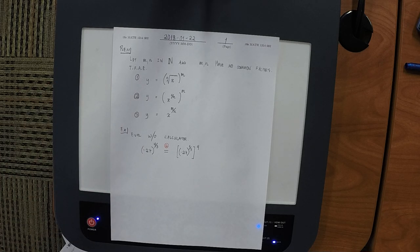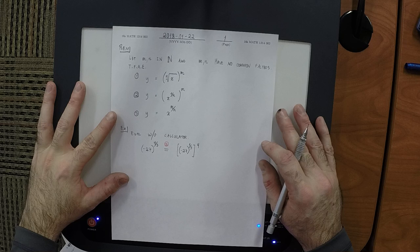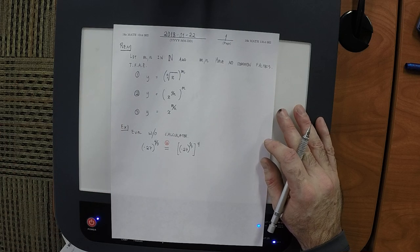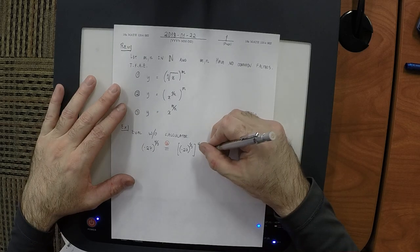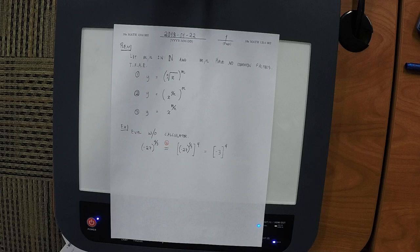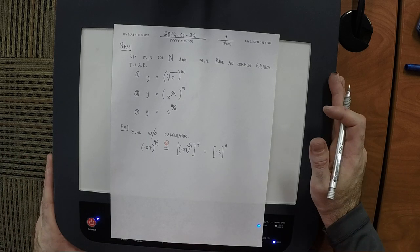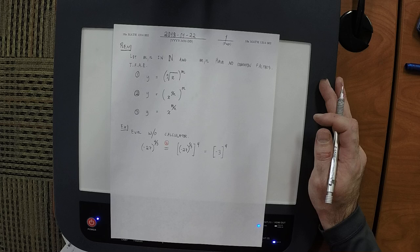Can we do negative 27 to exponent one-third? Yes — that means compute the cube root of negative 27. What is the cube root of negative 27? Negative 3, because if you had three copies of negative 3 and multiplied the first two together you get 9, and then multiply by the last negative 3, you get negative 27. So this would be negative 3 to exponent 4. What is negative 3 to exponent 4? 81 — that's four copies of negative 3: multiply the first two together, that's 9; multiply the last two together, that's another 9; so 81.